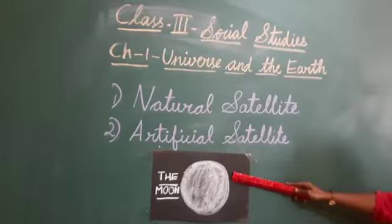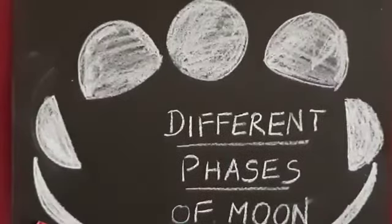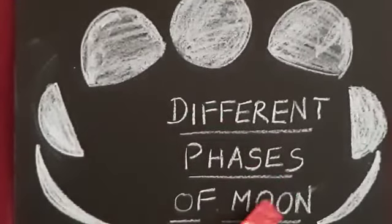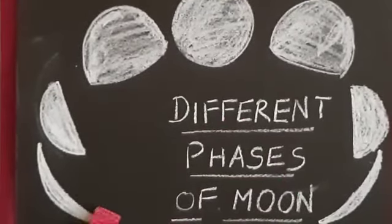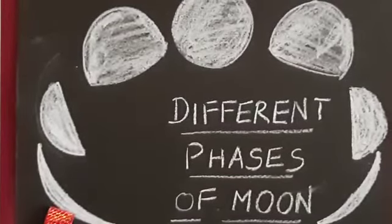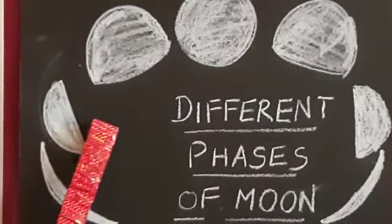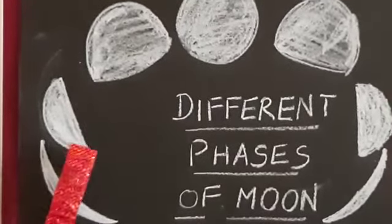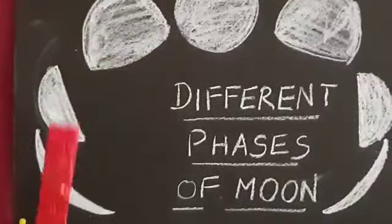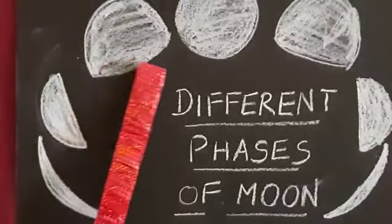Now we are going to see about the different phases of the moon. This picture shows the different phases of the moon. After Amavasya, the lighted phase of the moon increases steadily. As the moon keeps rotating around the earth, we get the different phases of the moon. You can see the crescent shape, and then the size of the moon gradually increases.